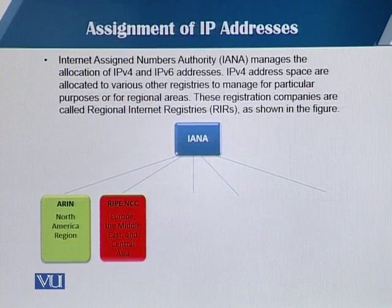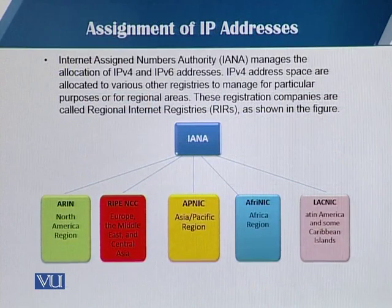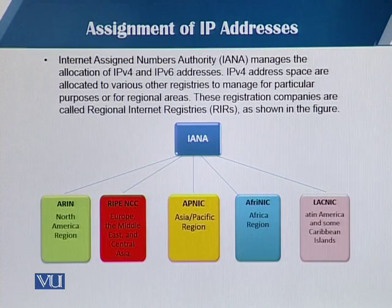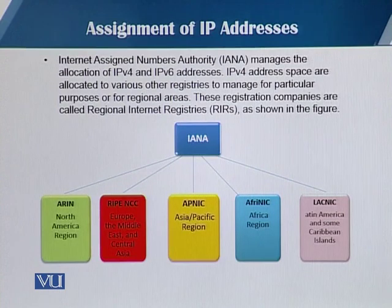So who assigns the IP addresses? There is a body called IANA — Internet Assigned Numbers Authority — that basically manages the allocation of IPv4 and IPv6 addresses. This IPv4 and IPv6 address space is allocated to different registries called Regional Internet Registries, or RIR. IANA has basically divided this into five regions.